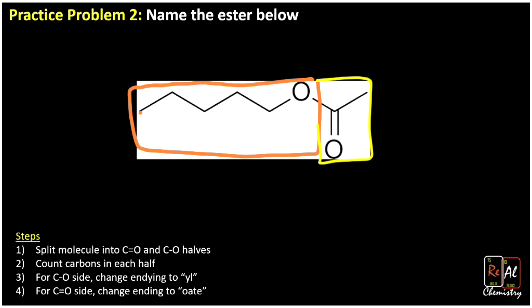So we've got one, two, three, four, five. So this would be a pentane. And then on the right-hand side, we have just one, two. So that would be an ethane.